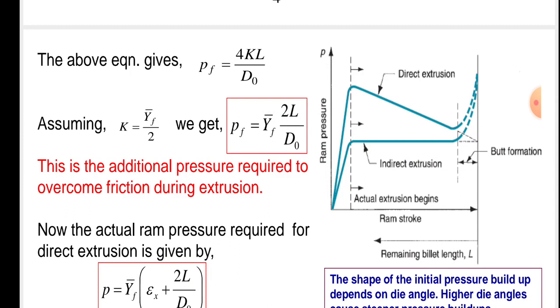The y-axis presents ram pressure and x-axis presents ram stroke. Direct extrusion is given by the graph and indirect extrusion is also given there. Butt formation is also given. Actual extrusion begins from that place.